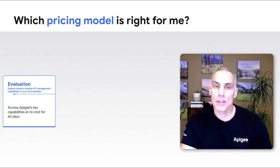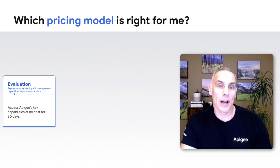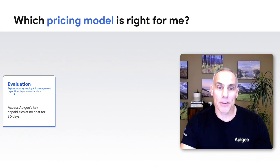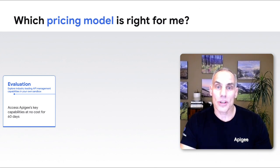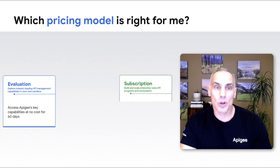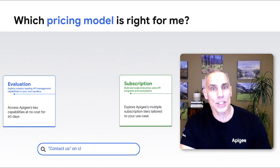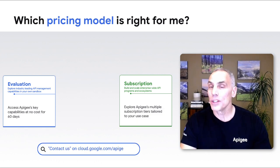If you want to use Apigee for real data, you have a couple options. If you prefer predictable costs every month, Google offers a prepaid subscription in multiple tiers. To access Apigee using subscription pricing, you can contact a sales specialist through the website.